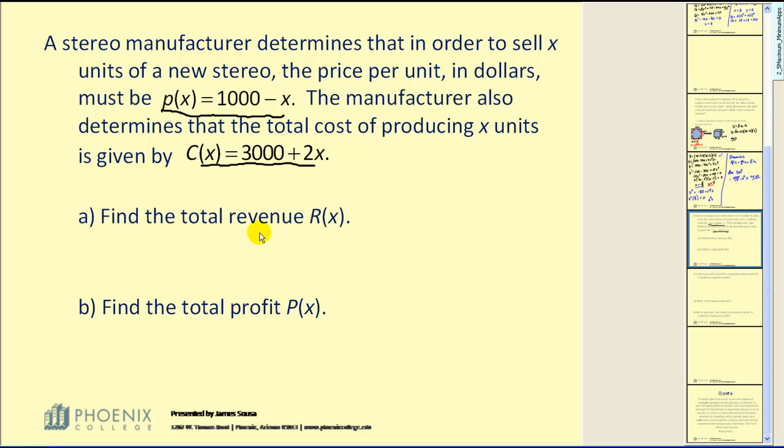Part A asks you to find the revenue function. Revenue would be equal to the number of items sold, which is x, times the price of each unit. So doing the substitution for the price function, we would have x times the quantity 1000 minus x, which would give us 1000x minus x squared.